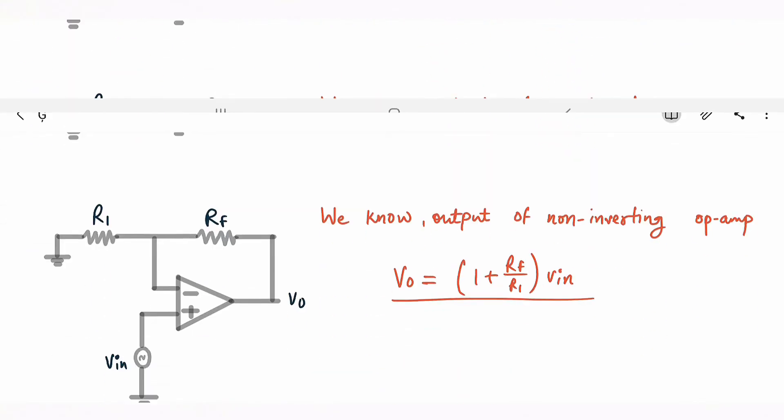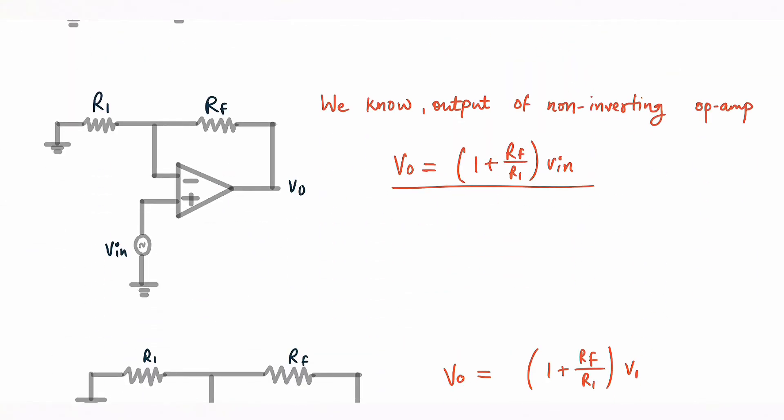Now if you remove R and C from that circuit you will get simple non-inverting op amp. We all know this circuit and we all know the output of this circuit: Vo equal to 1 plus Rf upon R1 into Vin.